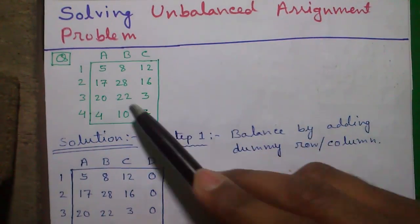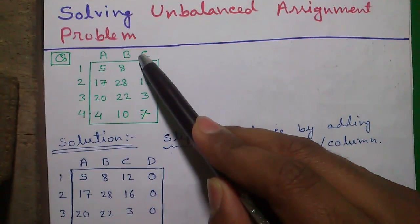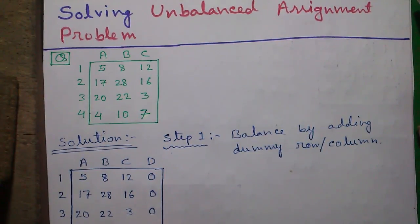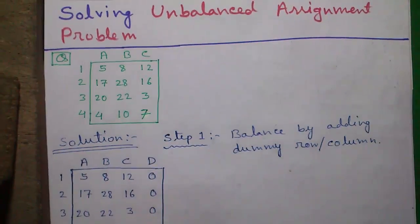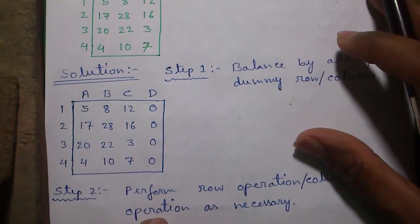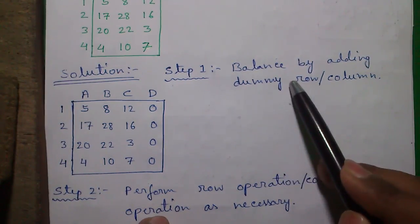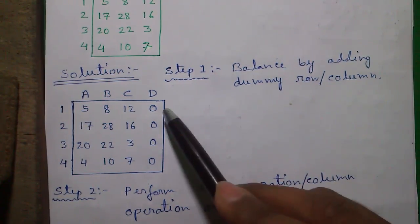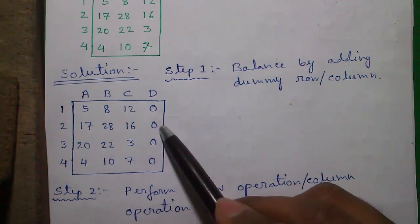Here is an unbalanced problem with 4 numbers of rows and 3 numbers of columns. To solve an assignment problem it must be a square matrix, that is number of rows and number of columns must be equal. So step 1, balance the assignment problem by adding dummy row or dummy column. Here we will add a dummy column with all zeros. So we will get a 4x4 matrix.